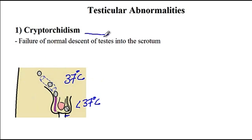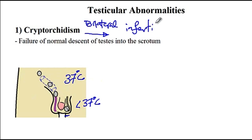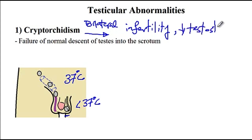Therefore, bilateral cryptorchidism will result in infertility. Some other changes you may see with bilateral cryptorchidism include decreased testosterone secretion. With unilateral cryptorchidism, since there is already one testes that has descended, testosterone secretion is normal. So with bilateral cryptorchidism there is infertility as well as decreased testosterone secretion.